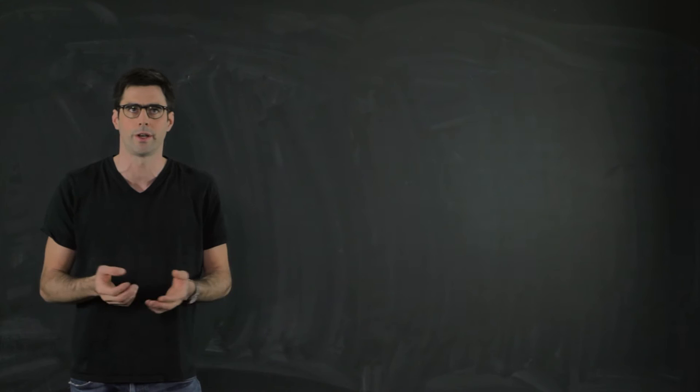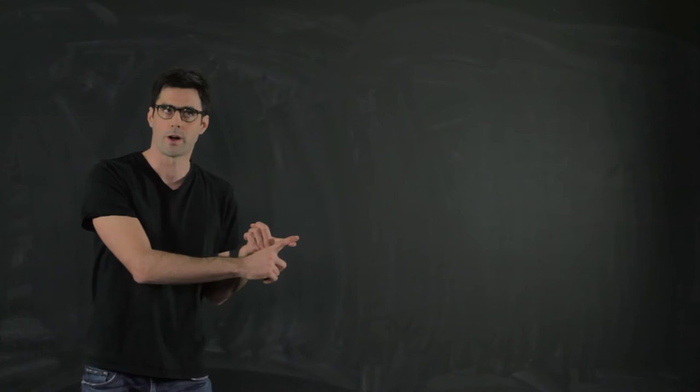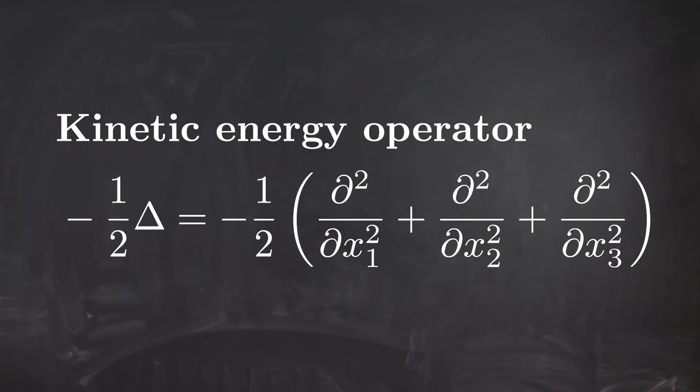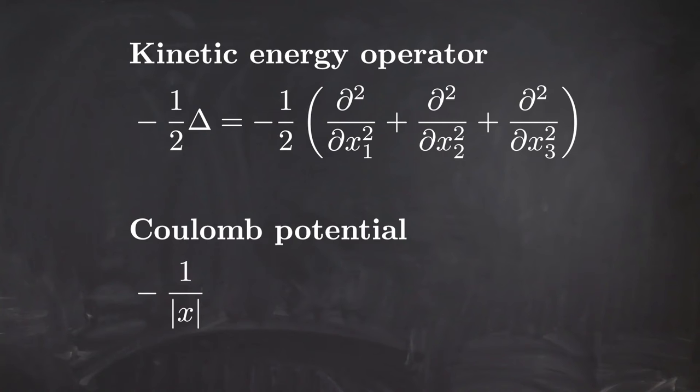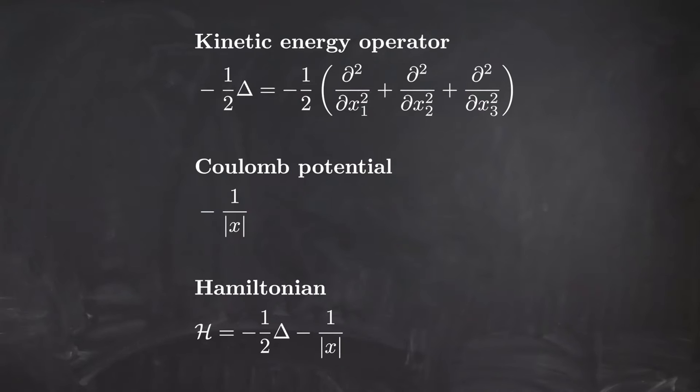In contrast to classical Hamiltonian mechanics, the quantum Hamiltonian is now an operator and is again the sum of two parts: a kinetic part and a Coulomb operator. The kinetic energy operator is given by the Laplacian, more precisely by -½Δ, where the Laplacian gathers the second derivatives over all coordinates. The Coulomb operator is a multiplicative potential that acts on any wave function and multiplies it by -1/|x|. Hence, the Hamiltonian can be written as the sum of these two parts.